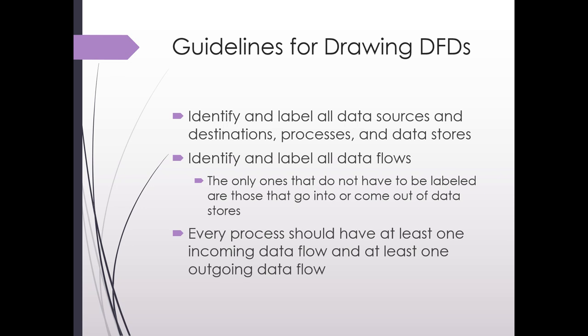Make sure you have labeled and identified all data sources and destinations, all of your processes, and all data stores. For data flows, you should label all of them except for those that go in and out of a data store. The last rule to keep in mind: every process should have at least one incoming data flow and one outgoing data flow. The incoming flow can come from a data source or another process, and the outgoing flow can go to a destination or another process.